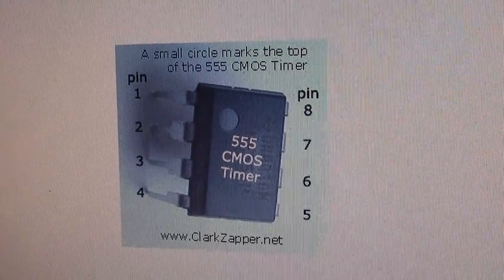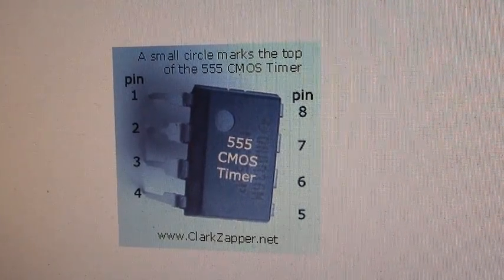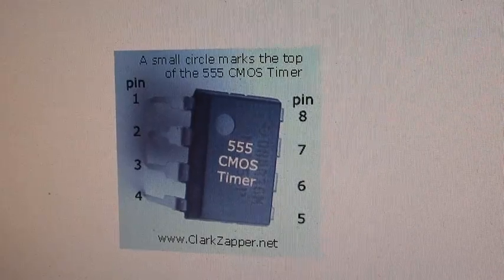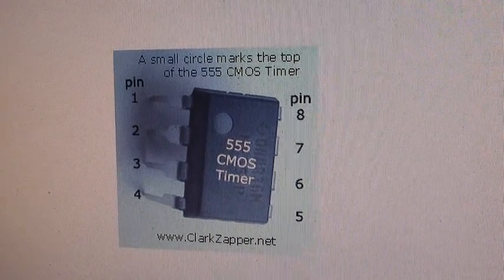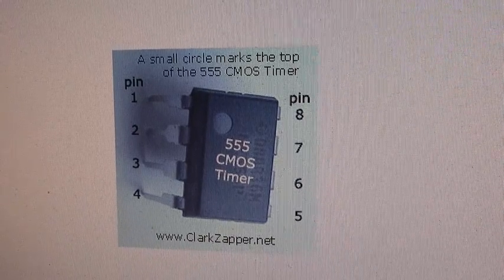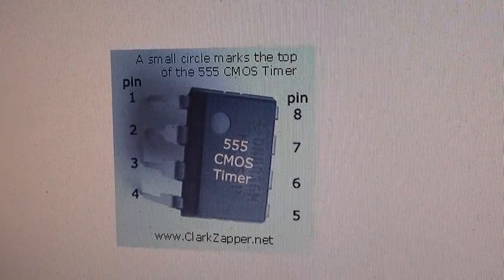Here's a nice blow up of the 555 CMOS timer. You can see the small circle in the top left. It's imprinted in the plastic of the CMOS timer. And that top circle marks pin 1.